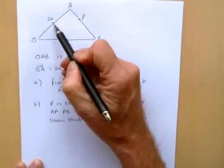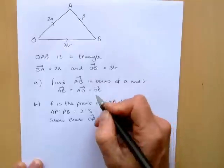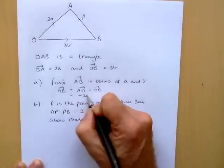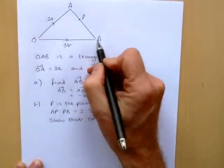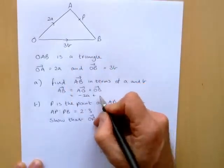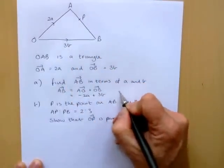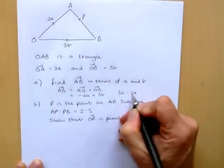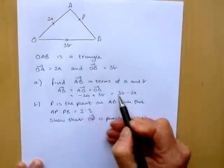Now A to O goes against the vector arrow so this means we have to reverse the sign from plus to minus so it's minus 2A, and then from O to B is going with the arrow so that's plus 3B. So that's 3B minus 2A if we put the positive term first but either will do.